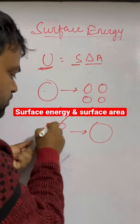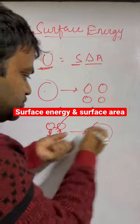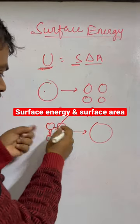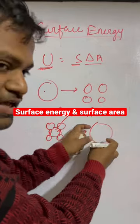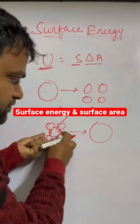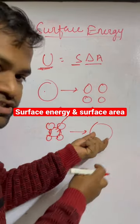Now the reverse happens when smaller droplets merge together to form a bigger drop. Here the surface area is lesser than the initial surface area, that means surface energy will decrease.